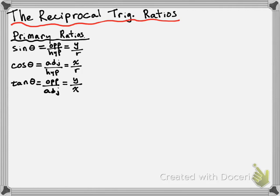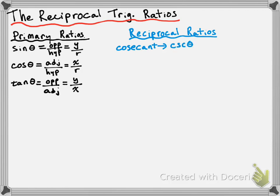Now let's take a look at the reciprocal ratios. The first reciprocal ratio is called cosecant. It's typically written as CSC of theta, and it is the reciprocal of the sine function, which means it is equal to 1 over sine of theta. Since it's the reciprocal of sine, we can write it as hypotenuse divided by opposite, or r over y.